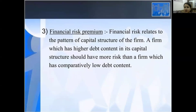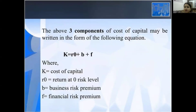The financial risk premium relates to the pattern of the capital structure of the firm. A firm which has a high debt content in its capital structure should have more risk than the firm which has comparatively low debt content. The above three components of capital may be expressed in the following equation: K equals R0 plus B plus F, where K is the cost of capital, R0 is return at zero level, B is the business risk premium, and F is the financial risk premium.